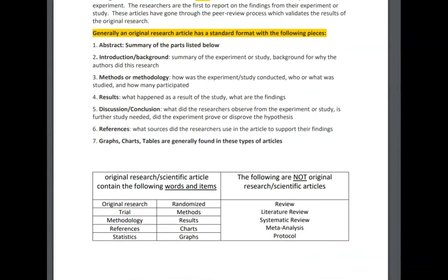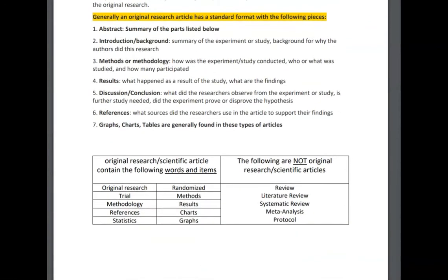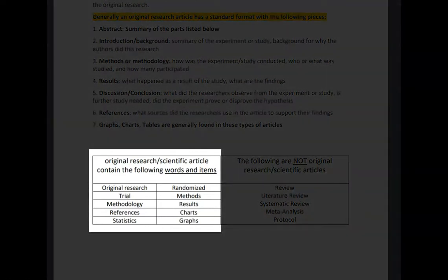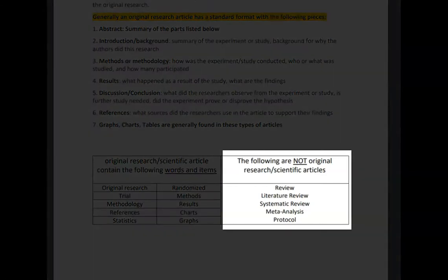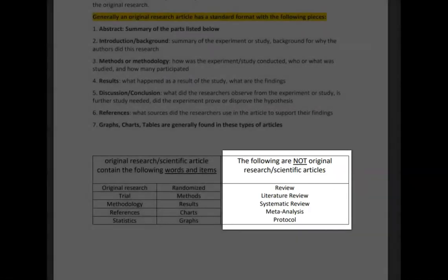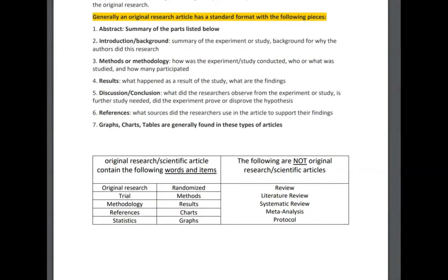Scrolling down slightly to the table here — original research and scientific articles usually contain the following words and items: randomized methods, original research, trial, methodology, to name a few. On the other side, the following are not typically original research or scientific articles: a review, literature review, systemic review, meta-analysis, or protocol. Those are some words to look for and words to discard when you're looking for original research.